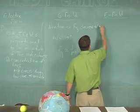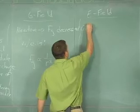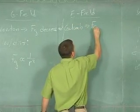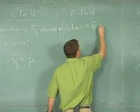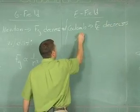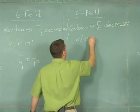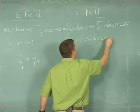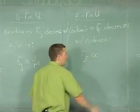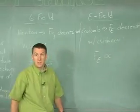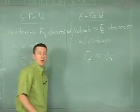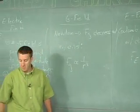According to Coulomb's Law, the electrostatic force decreases with distance as well. And how? It decreases inversely proportional to the square of the distance of separation.